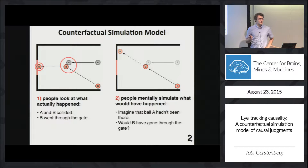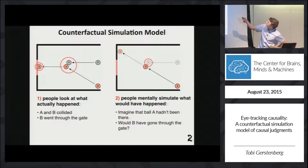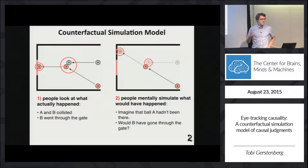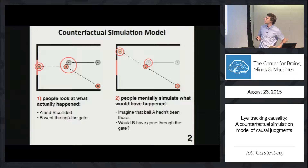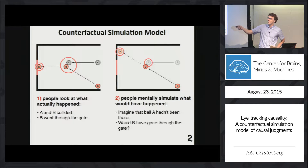Our counterfactual simulation model proposes that the first thing you do is pretty uncontroversial — you first look at what actually happened: the two balls collided and ball B went through the gate. The second, more controversial thing is that you mentally simulate what would have happened if ball A hadn't been present in the scene. You remove ball A mentally and extrapolate what would have happened in that counterfactual world using your intuitive understanding of physics. If that's correct, A should be seen as more of the cause the more certain you are that the outcome in the counterfactual world was different from the actual world.